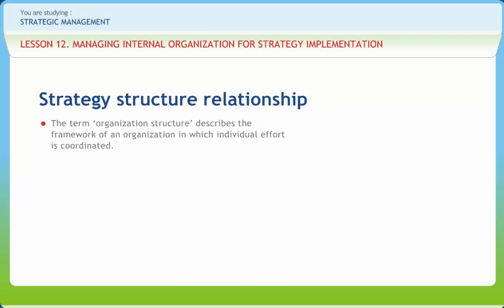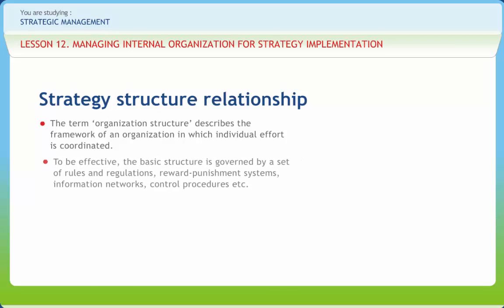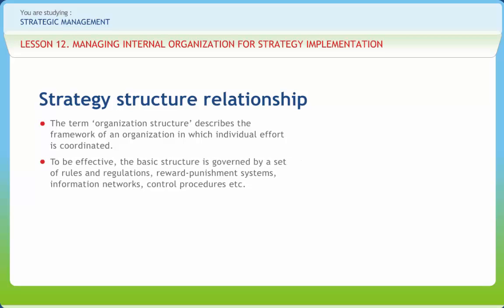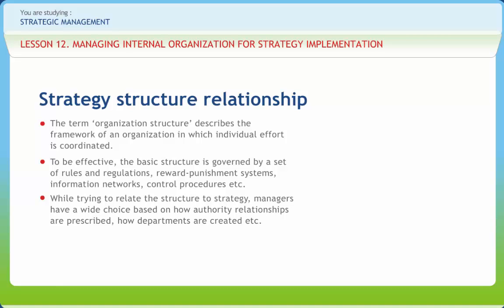The term organization structure describes the framework of an organization in which individual effort is coordinated. It is essentially a chart of relationships. To be effective, the basic structure is governed by a set of rules and regulations, reward-punishment systems, information networks, control procedures, etc. While trying to relate the structure to strategy, managers have a wide choice based on how authority relationships are prescribed and how departments are created. The design choices basically revolve around the following types.